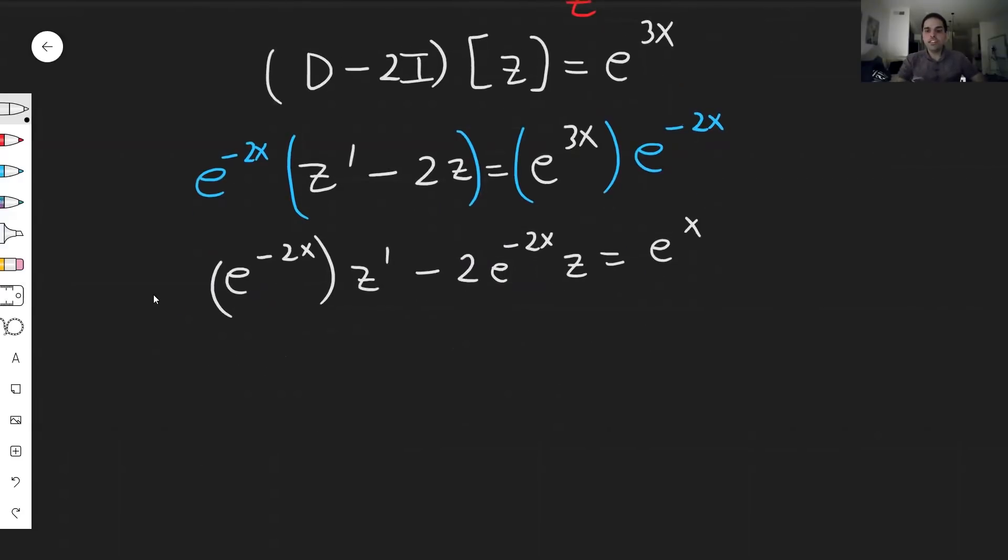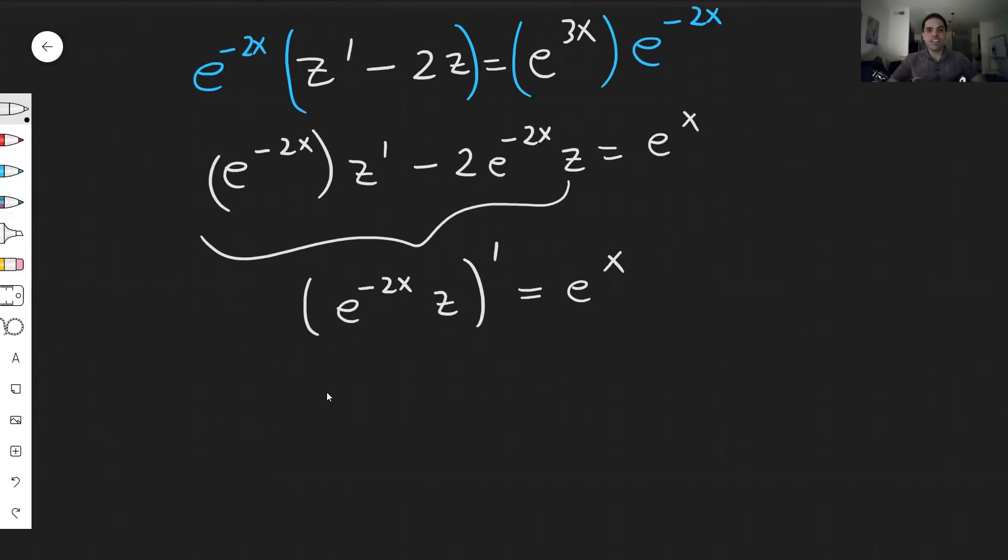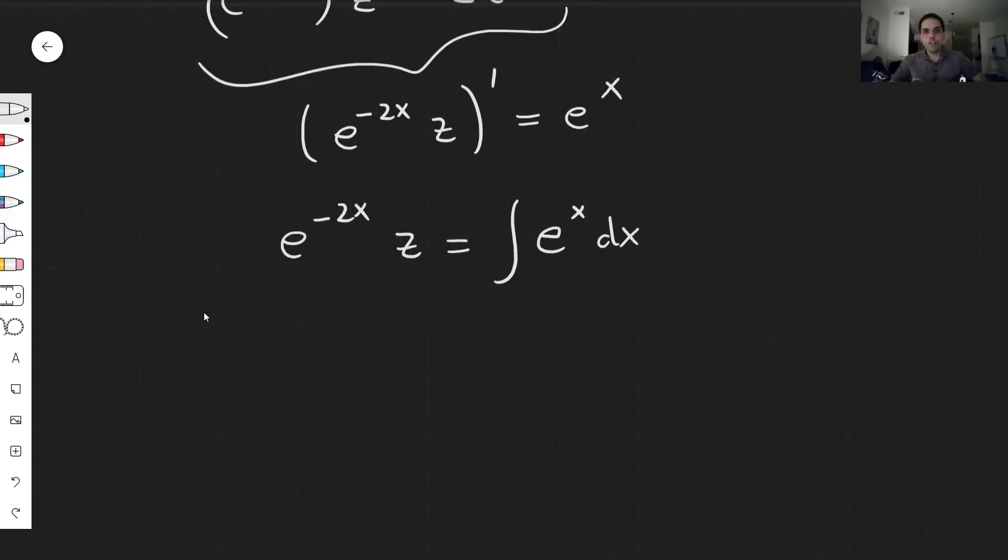And as promised, this becomes the derivative of a product because you do z' times this and then plus derivative of this times z. So in fact, it's the same thing as (e^(-2x)z)' = e^x. Because if you differentiate this, you get z'; if you differentiate that you get -2e^(-2x). Great, which means now we can just directly solve this. So this becomes e^(-2x)z = ∫e^x dx. Therefore e^(-2x)z becomes e^x + some constant, let's call it A.